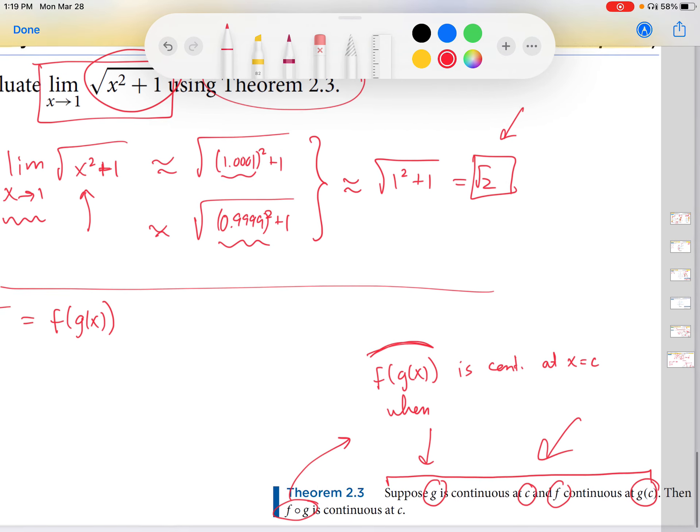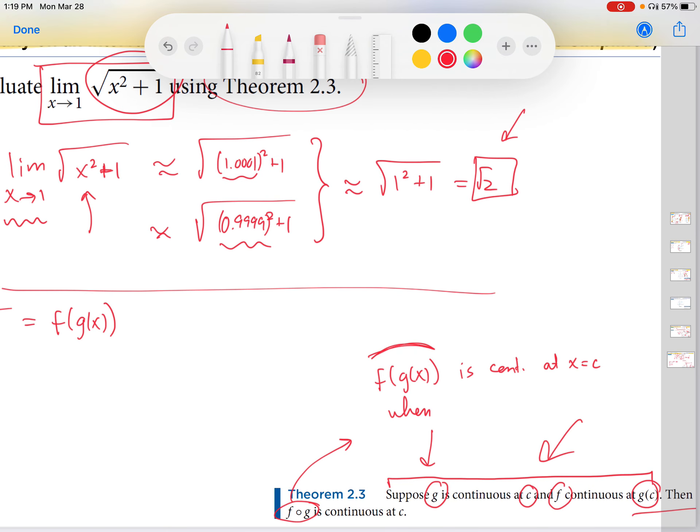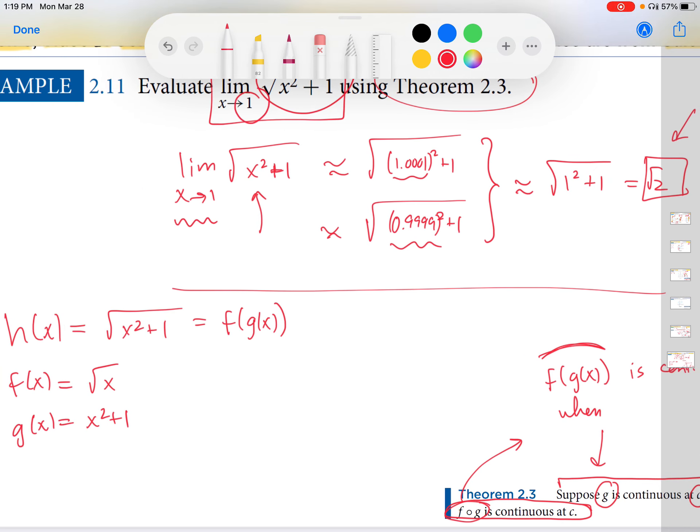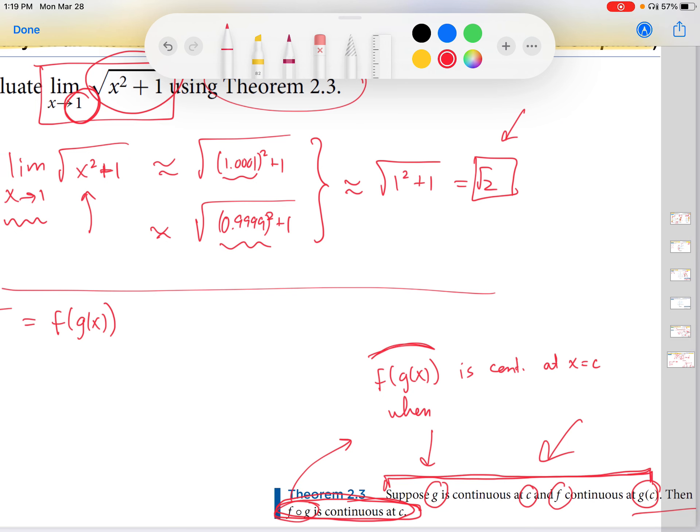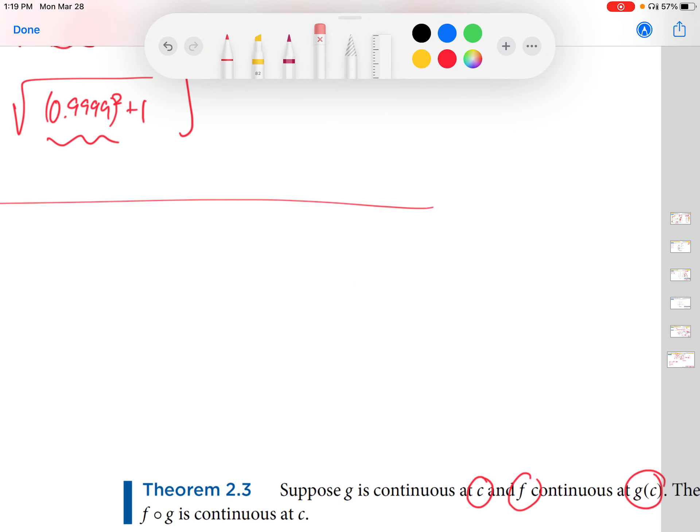So now we're going to go back to this theorem and check all this stuff. We want to figure out that f of g of x is continuous at c. C, in this case, is x equals 1. So in order for that to be the conclusion of the theorem, I need to satisfy these hypotheses of the theorem. So there's an and here. So it relates to hypotheses. It's this one and then also this one. So we have two things to check.